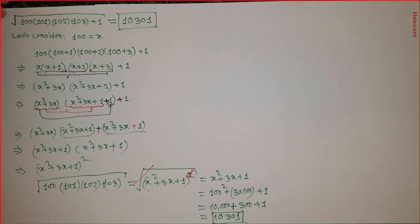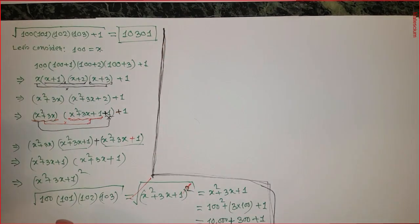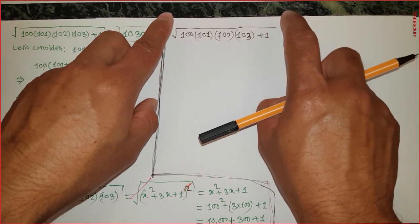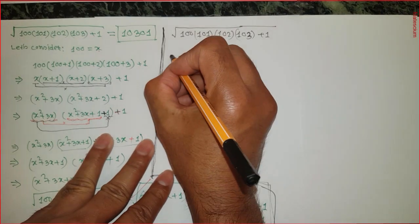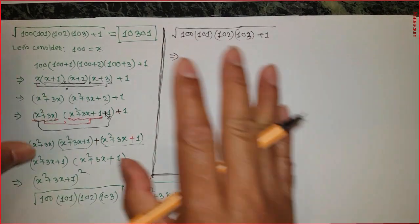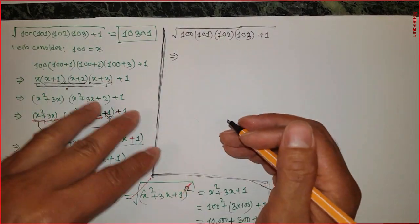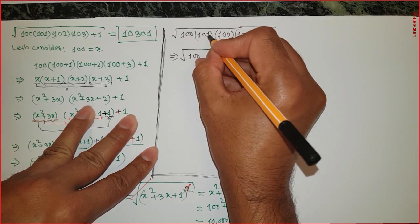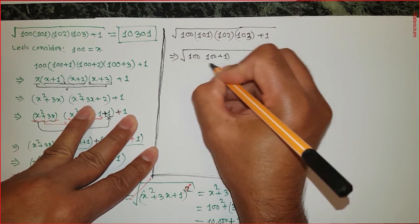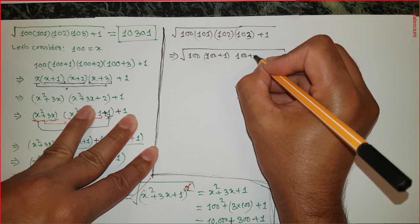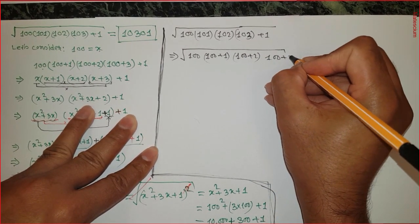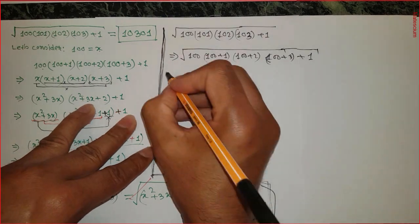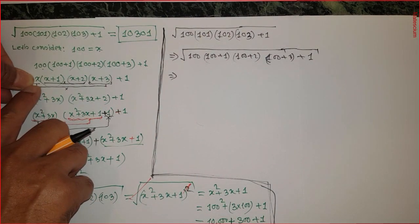Don't go — I'm going to apply the conventional mathematical approach to solve this problem as an alternative solution. I'll use the same approach but without using x or any additional parameters. Let's rewrite the expression: 100 stays the same, 101 is 100 plus 1, 102 is 100 plus 2, 103 is 100 plus 3, plus 1, and the square root is over every term.